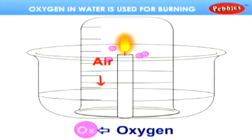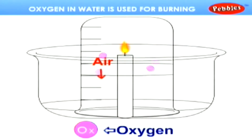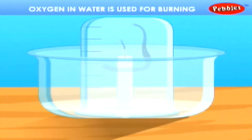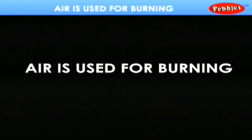As the oxygen present in the water has been used, the level of water increases. When the oxygen present in the water is fully utilized, the candle stops burning as the oxygen from the atmosphere cannot enter into the jar.